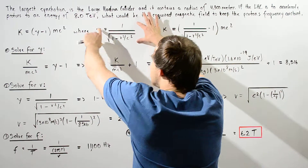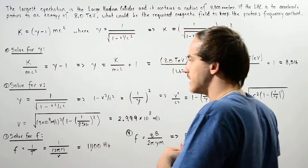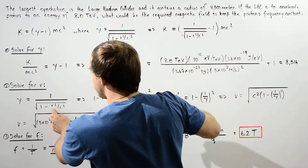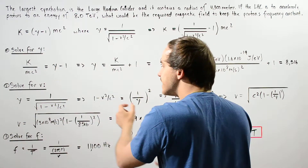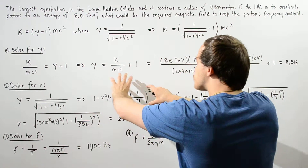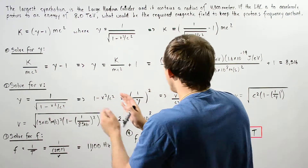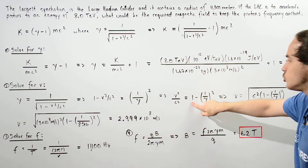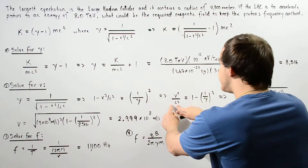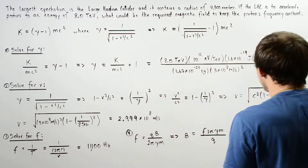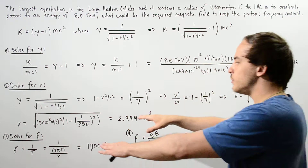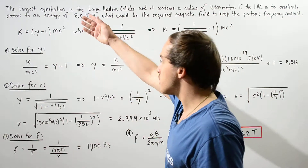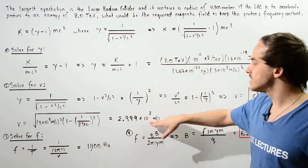Now we use gamma to calculate the relativistic velocity. Starting from gamma equals 1 over the square root of (1 minus V squared over C squared), we rearrange to get V squared over C squared equals 1 minus (1 over gamma) squared. Taking the square root and multiplying by C, with C equal to 3 times 10 to the 8 m/s and gamma equal to 8,516, we find the proton's velocity is approximately 2.999 times 10 to the 8 meters per second.